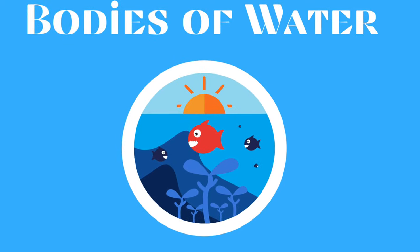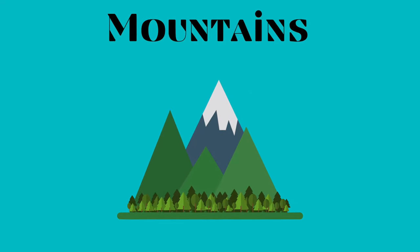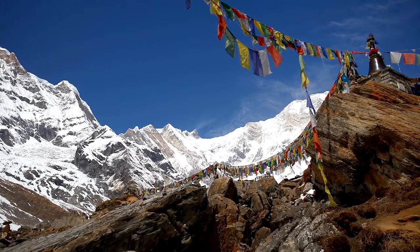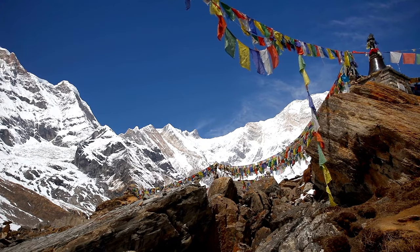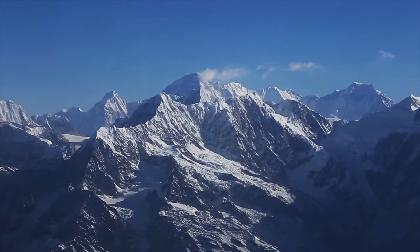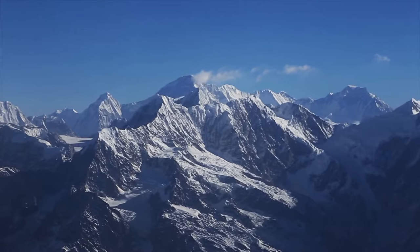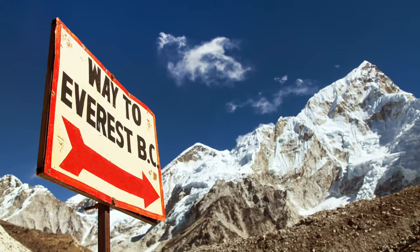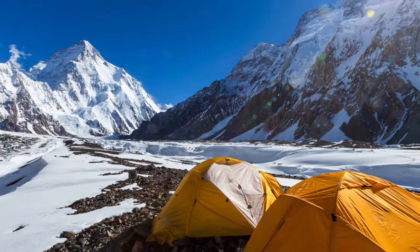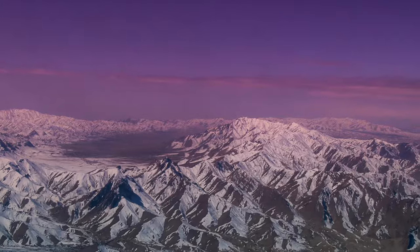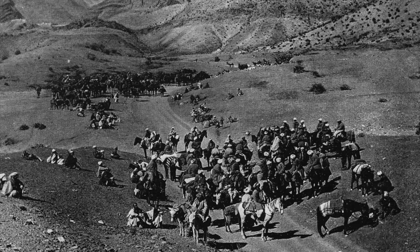Topic number one is mountain ranges. There are three important mountain ranges of note in India. The Himalayas are the biggest mountain range on the subcontinent — 14 of the peaks are over 26,000 feet high. The three highest mountains are Mount Everest, K2, and Kangchenjunga.